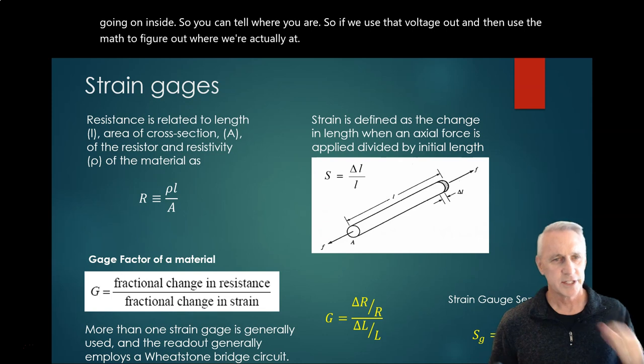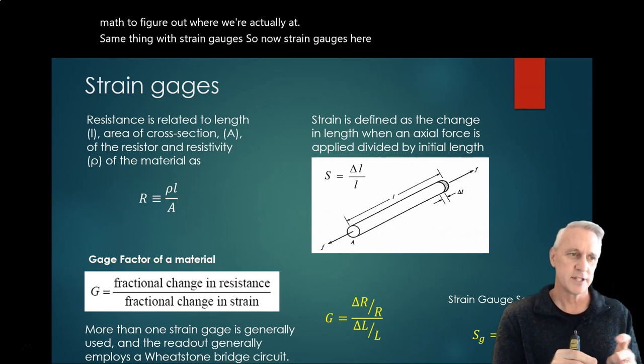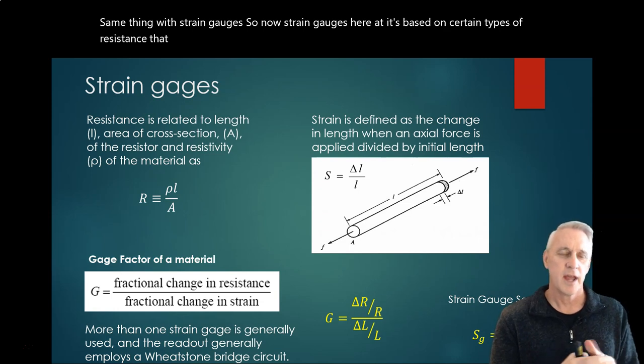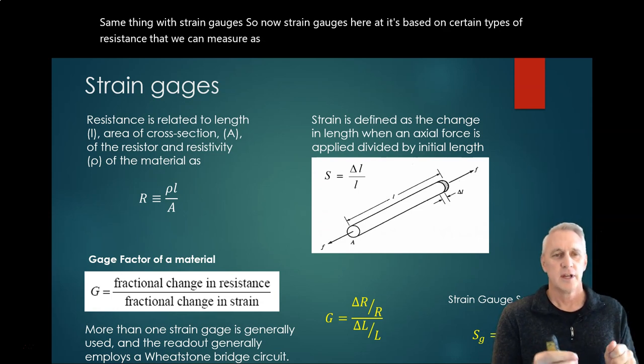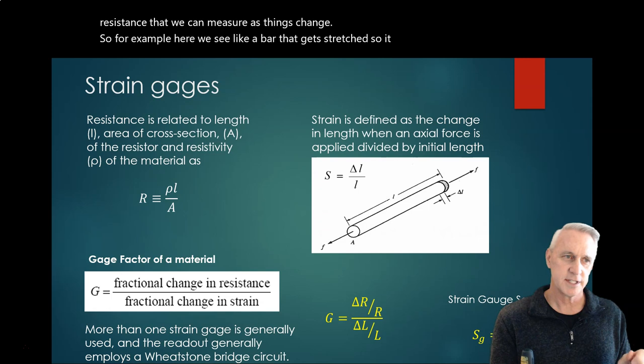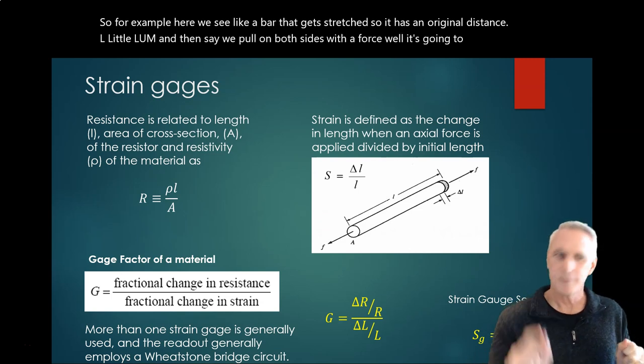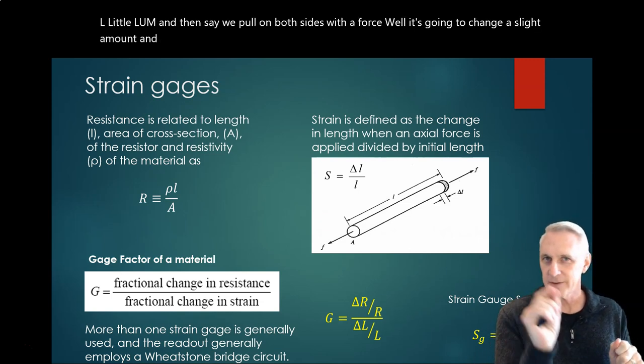Same thing with strain gauges. It's based on certain types of resistance that we can measure as things change. For example, here we see like a bar that gets stretched. So it has an original distance L. And then if we pull on both sides with a force, it's going to change a slight amount, maybe like a fraction of a centimeter.